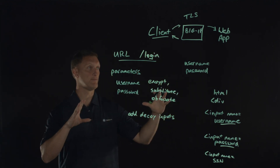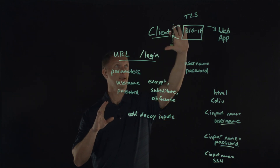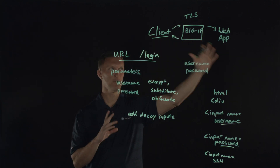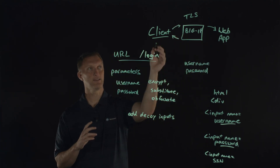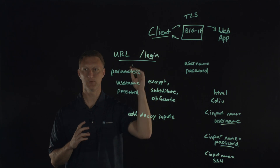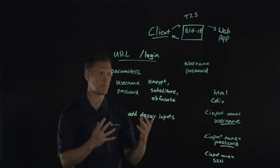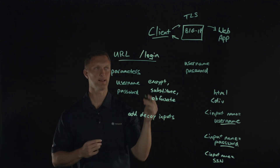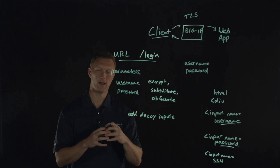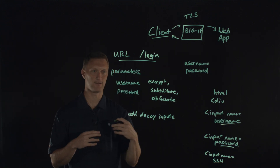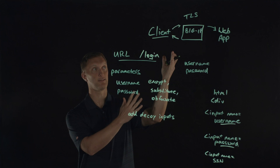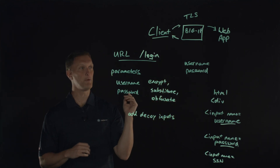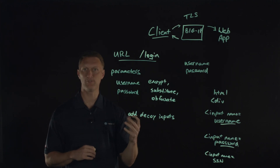So again, DataSafe — while we can protect data in transit across the wire with TLS encryption, it's still important to protect the client-level browser, and that's what DataSafe is all about. It does some really cool things with the interaction between the BIG-IP and the client browser that keeps all of your data safe. You don't have to install anything on the client, you don't have to do anything different — you just enable this on the BIG-IP and your clients are automatically protected.